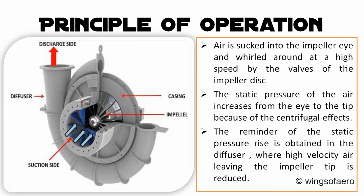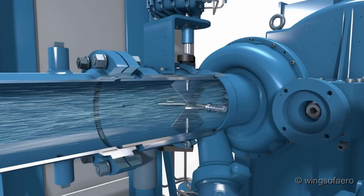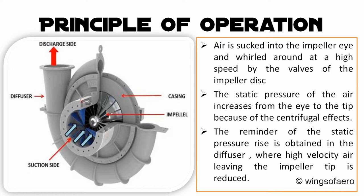In the principle of operation, air is sucked into the impeller eye through an accelerating nozzle and whirled around at high speed by the vanes on the impeller disc. At any point in the impeller, the flow experiences a centrifugal acceleration due to a pressure head. Hence, the static pressure of the air increases from the eye to the tip of the impeller.